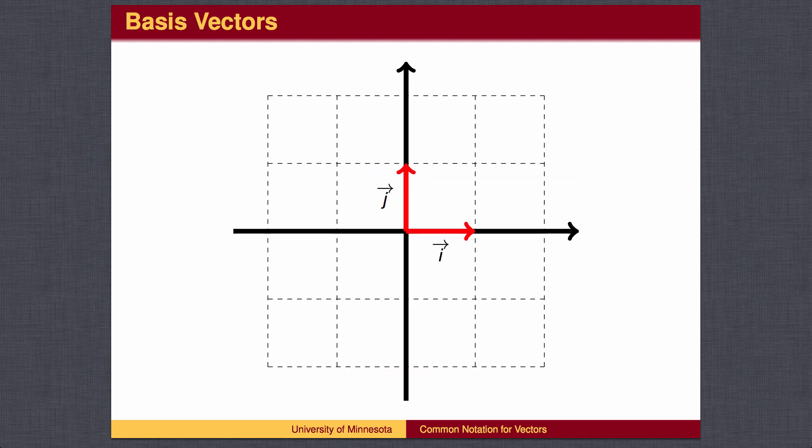A third way to describe vectors comes from the desire to decompose vectors into vertical and horizontal components. We give a special name to the vector which goes one unit to the right. That vector is named i. Likewise, the vector which goes one unit up is called j.